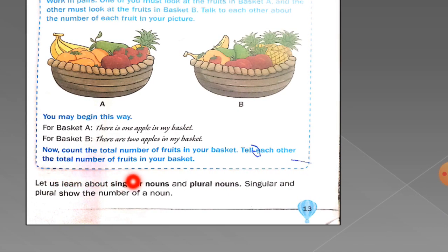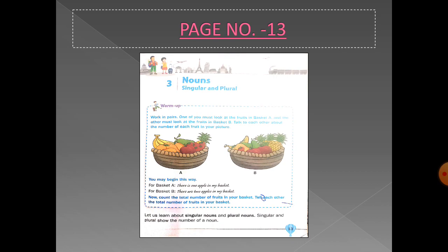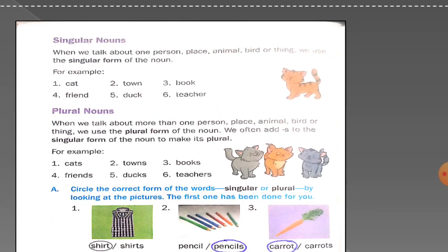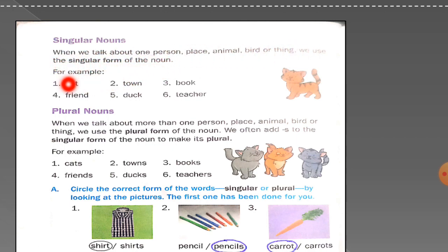Now let us learn about singular nouns and plural nouns. Singular and plural show the number of a noun. Come to page number 14. Singular nouns: when we talk about one person, place, animal, bird or thing, we use the singular form of the noun. For example: cat, town, book, friend, duck, teacher.